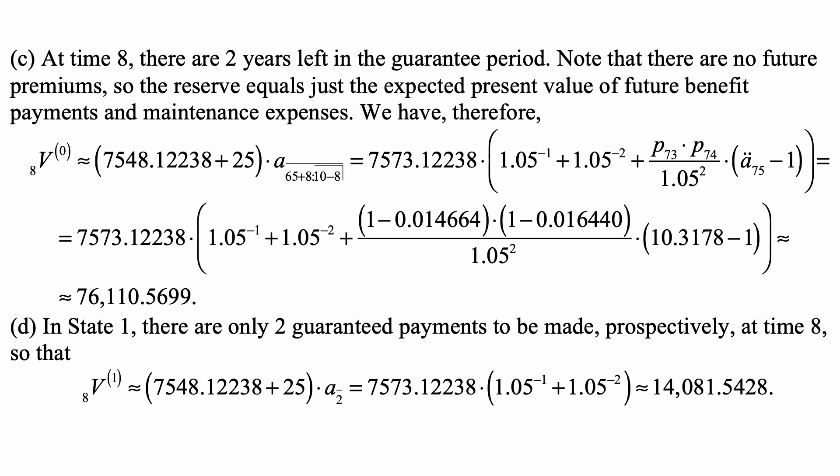For part D, in state 1 there are only two guaranteed payments to be made prospectively at time 8. So 8V1 equals 7548.12238, which is the premium, plus 25 times a̅⌉̅2. And that we calculate to be approximately 14,081.5428.